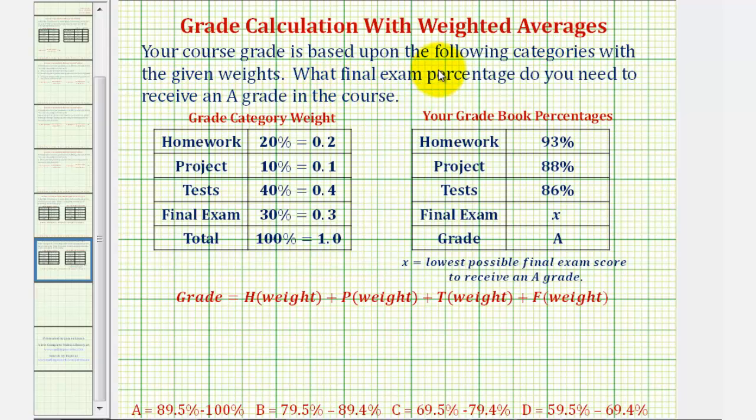Let's assume your course is based upon the following categories with the given weights listed here on the left. Homework is worth 20% of the grade. The project is worth 10% of the grade. Tests are worth 40% of the grade. And the final exam is worth 30% of the grade.